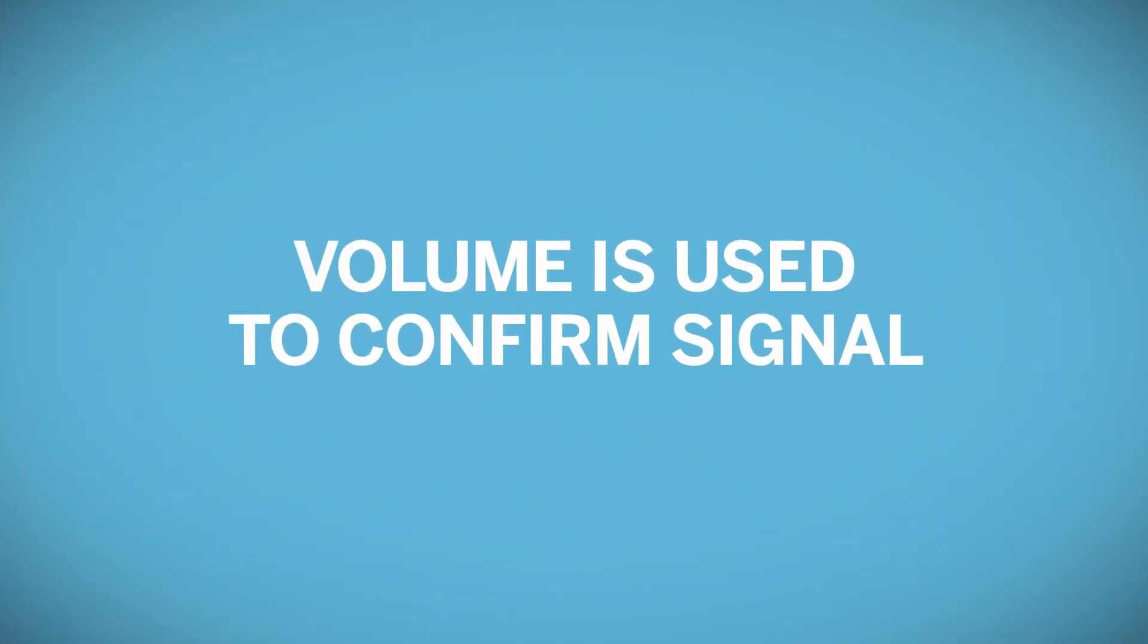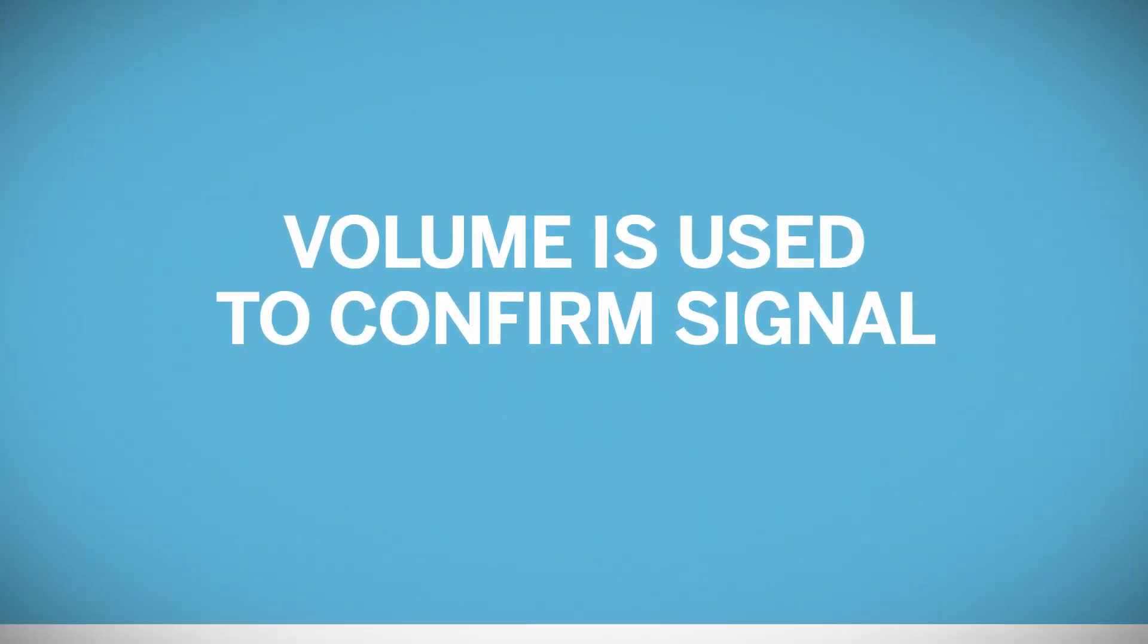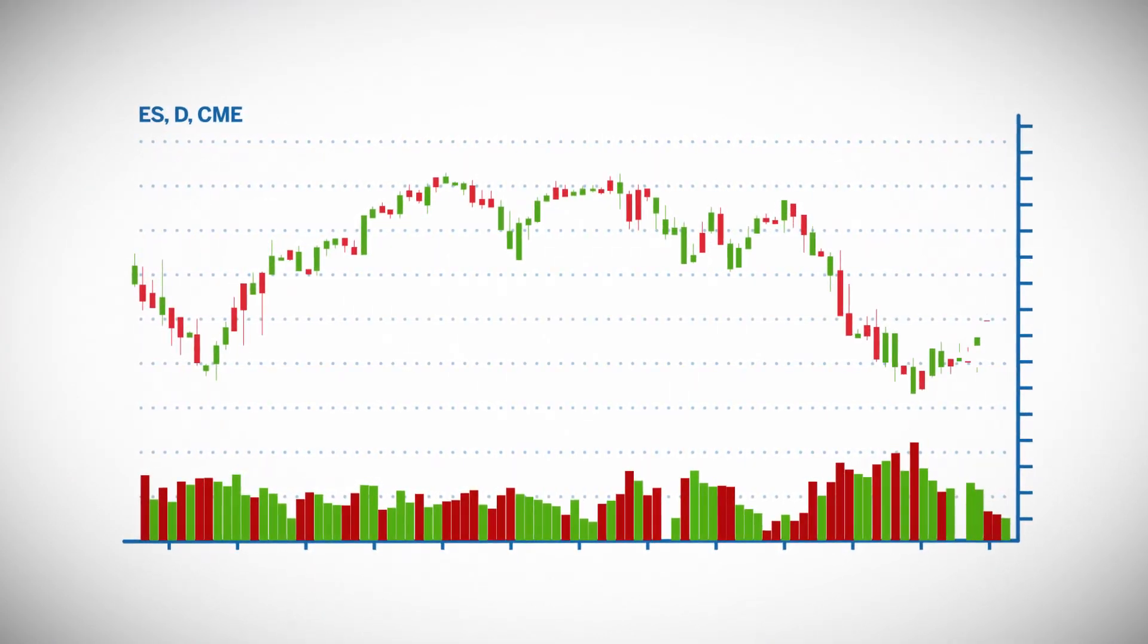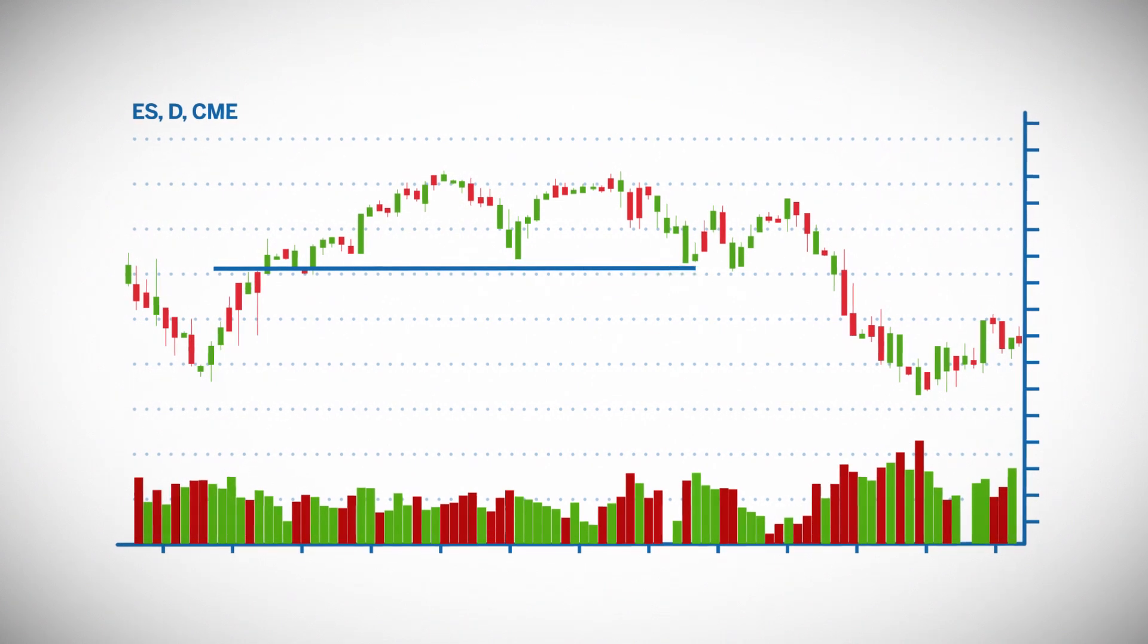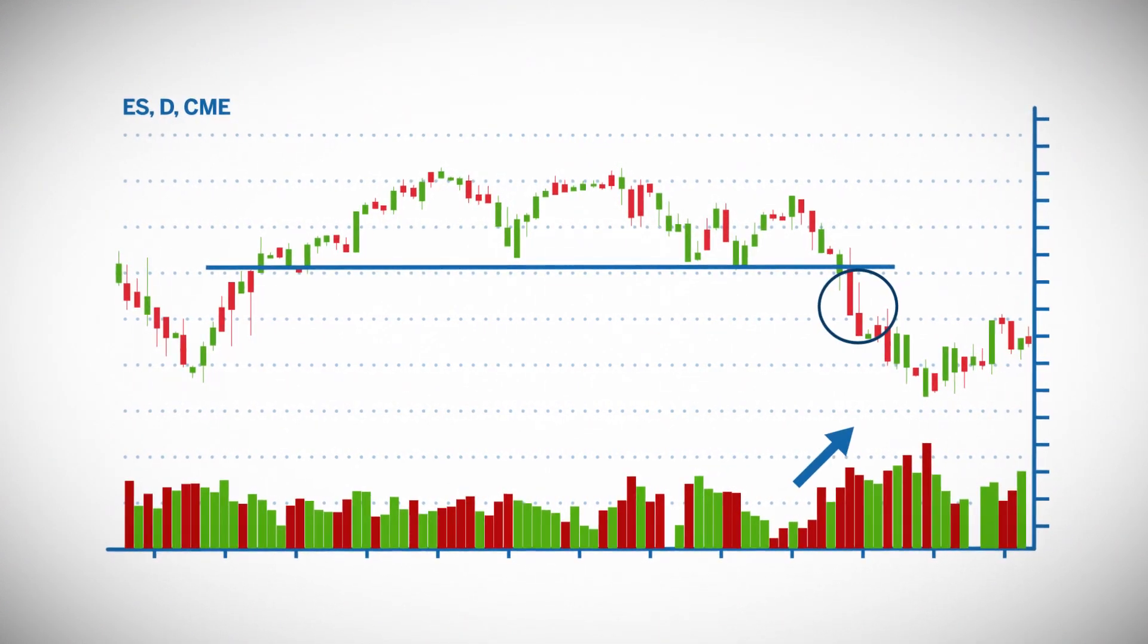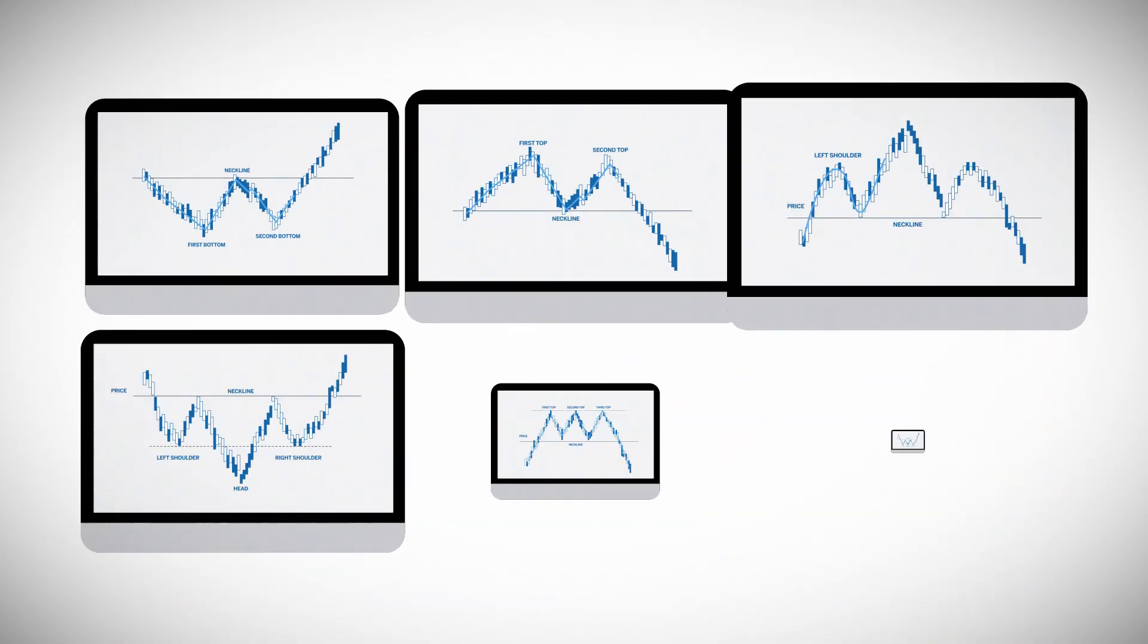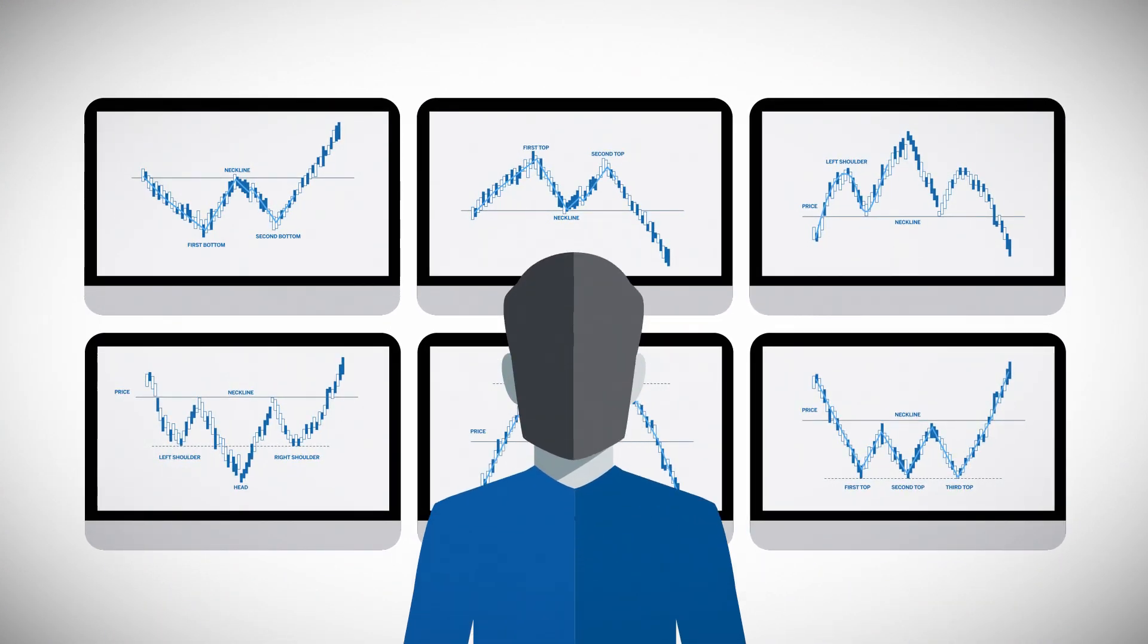Most reversal patterns are usually strengthened when volume is seen to be increasing as the pattern is being completed. For example, as this triple top is being confirmed with price moving below the lows created by the tops, volume can be seen increasing, further adding strength to the chart pattern. As with all technical analysis tools, they can be used in isolation or combined with other tools to strengthen your trading assumption.